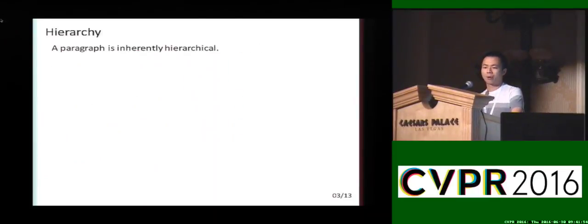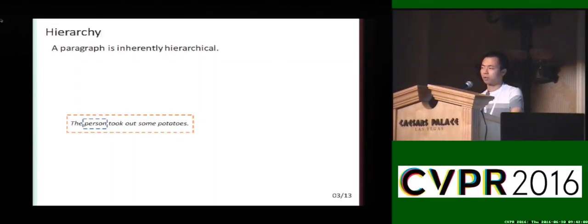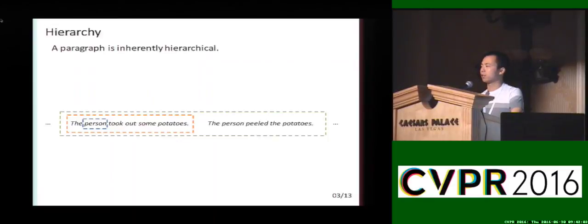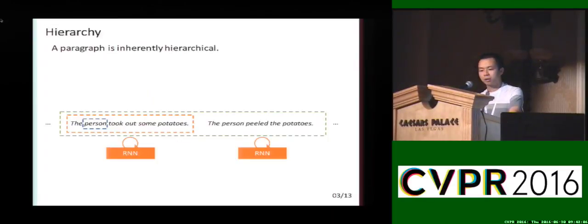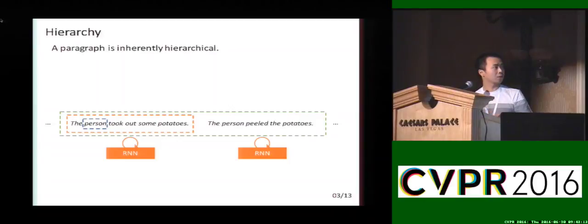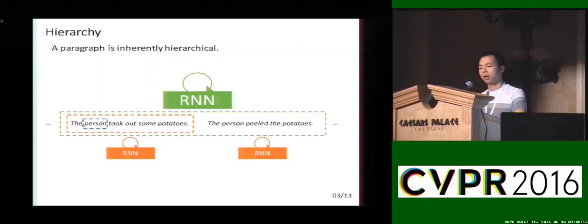We know that a paragraph is inherently hierarchical. A sentence consists of multiple words, and a paragraph consists of multiple sentences. So we can use an RNN to model the sentence so that given the current word, it predicts the next word. And on top of this, we can use another RNN to model the whole paragraph so that given the semantic representation of the current sentence, it predicts the next sentence.